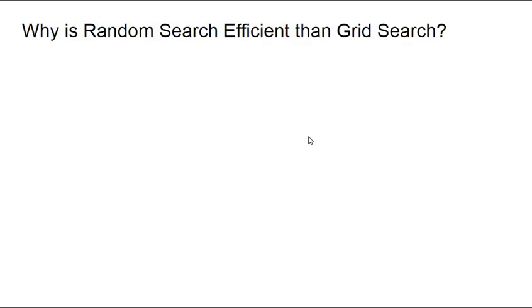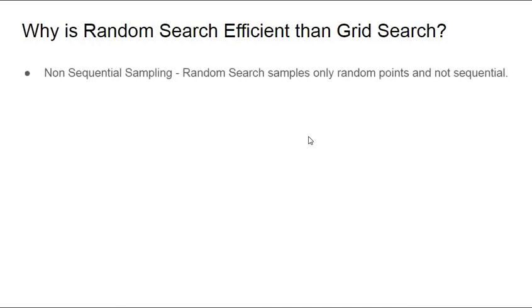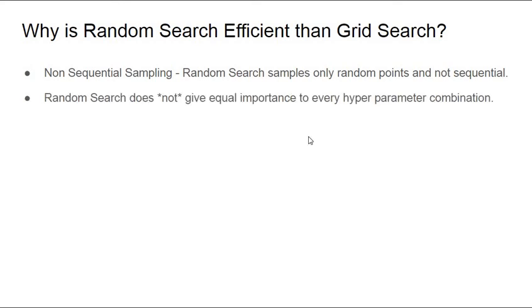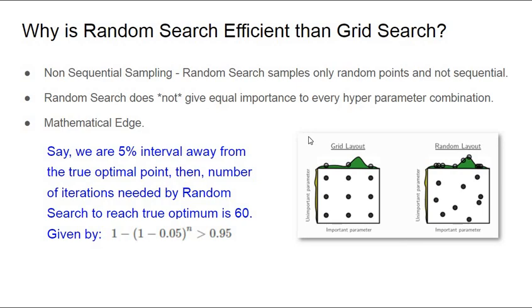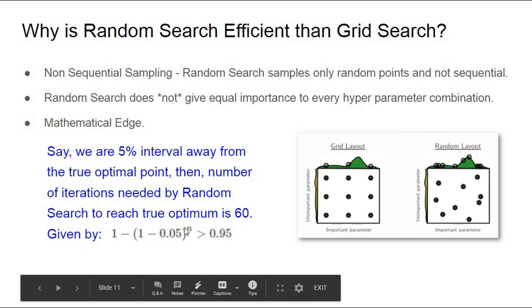Random search is more efficient than grid search for several reasons. First, random search is non-sequential sampling — it does not do an exhaustive search over all data points. Second, random search does not give equal importance to every hyperparameter combination, and not every combination is truly important in the solution space. There is also a mathematical edge: if we are 5% away from the true optimal value, it can be shown mathematically that the number of iterations needed by random search to reach the optimum point is only 60 trials. This formula helps evaluate the number of trials needed to achieve 95% confidence of reaching the true optimal point.